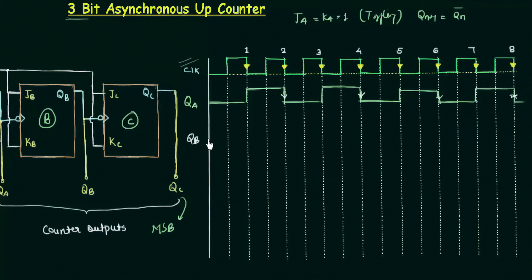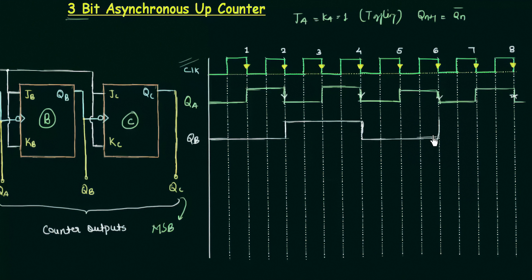QB is low initially and remains low until the first falling edge of QA, at which point toggling makes it go high. It stays high up to the next falling edge of QA, then goes low again due to toggling. Then finally it goes high, and then low. This is how QB will look.